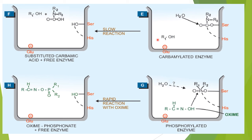Tacrine and edrophonium are shorter-acting anticholinesterases because they bind with only the anionic site of the enzyme with very weak bonds. Carbamates are intermediate-acting, binding with both the anionic and esteratic sites of the enzyme.